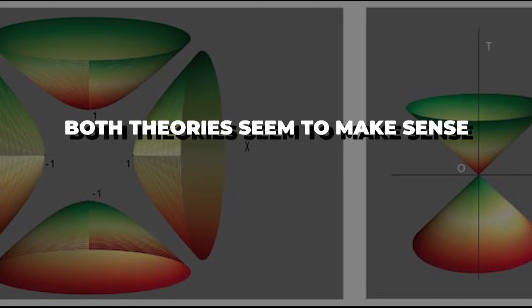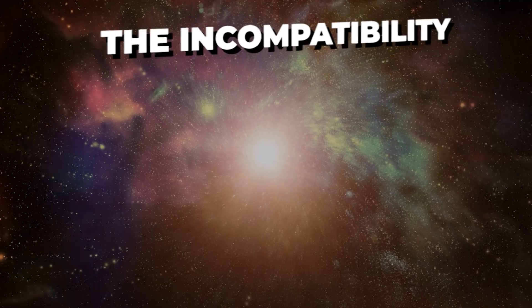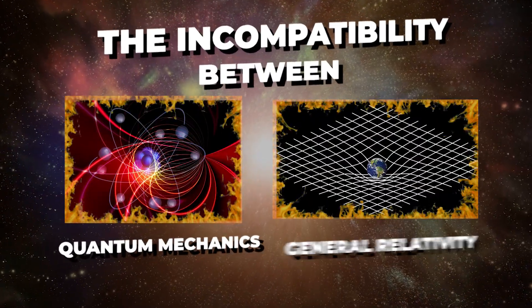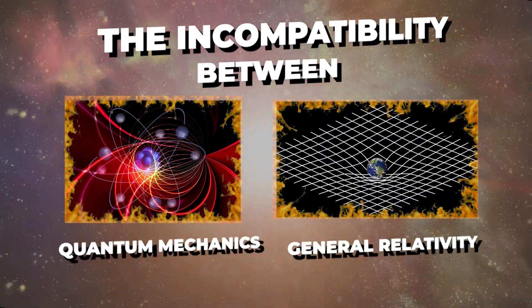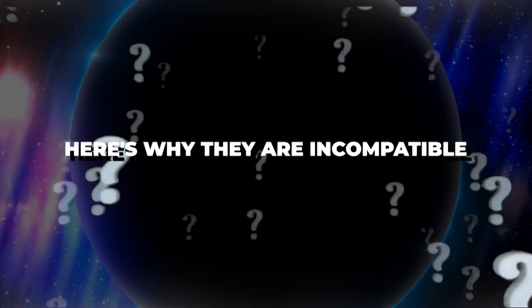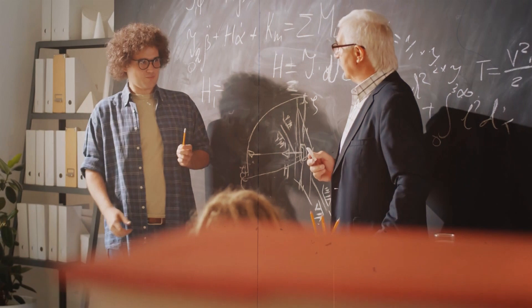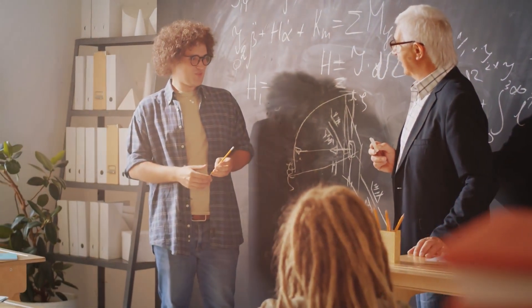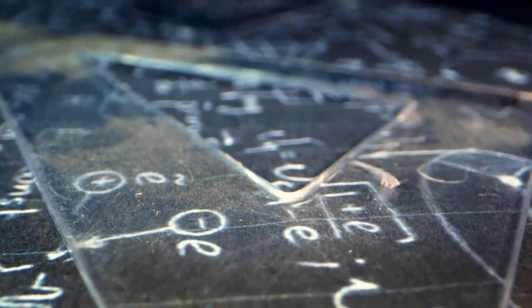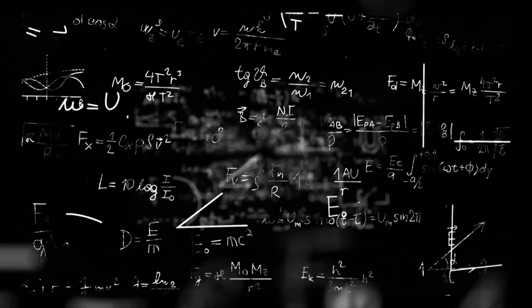Both theories seem to make sense. Why do they dislike each other? The incompatibility between quantum mechanics and general relativity arises when trying to describe situations where both are important, such as in the center of black holes or the very early universe. In the quest to understand the universe, physicists have constructed these two extraordinarily successful theories. Each theory is a master of its domain, yet when they meet, they are like two languages without a translator, each unable to describe the world in the terms of the other.